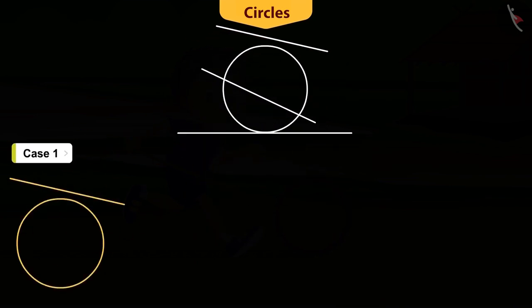In the first case, the line, say PQ, does not coincide with the circle at any point. In this case, line PQ is a non-intersecting line with respect to the circle.